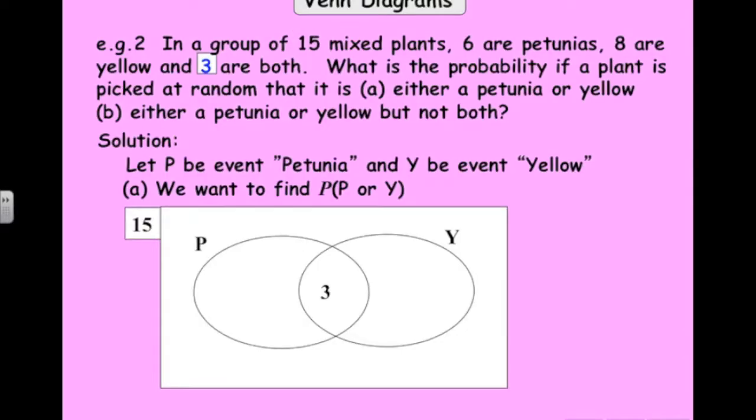Here's the numbers. 3 are both. The total number of petunias is 6, which means that value there must be 3. The total number of yellow plants is 8, which means that value there must be 5. Now if we add those all up, we get 11. But we had 15 plants, so there must be 4 on the outside. So the probability of P or Y, P union Y, 5 plus 3 plus 3 over 15, 11 over 15. The probability that it's either petunia or yellow, but not both, that's just the 5 and the 3 there. So add those two together, giving us 8 out of 15.